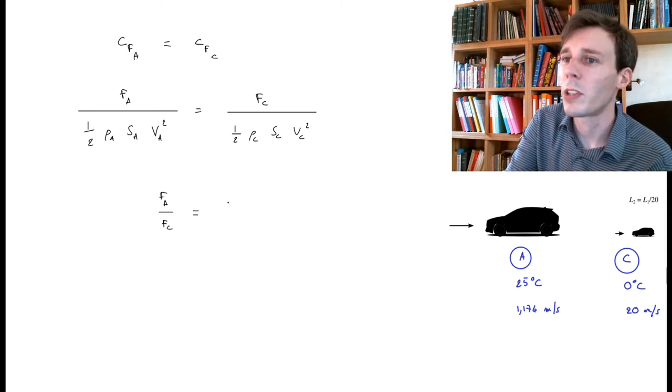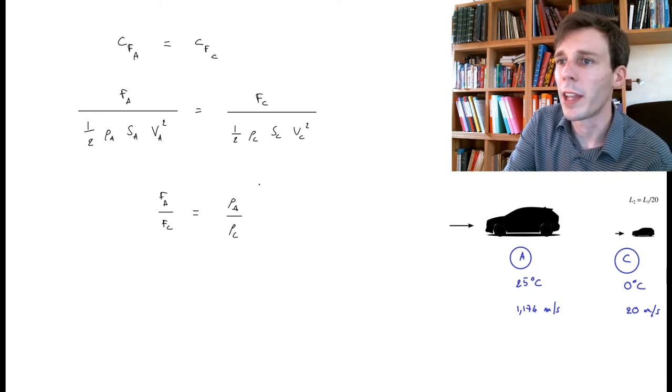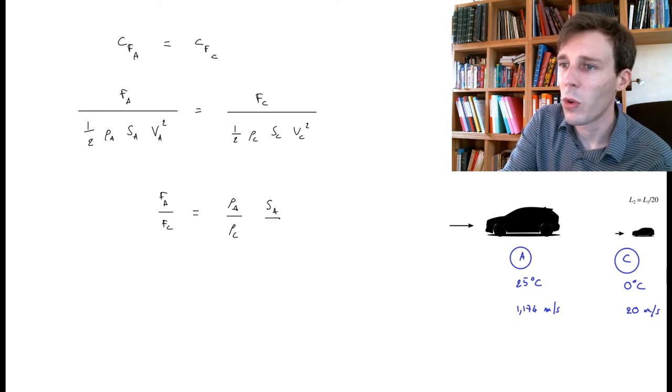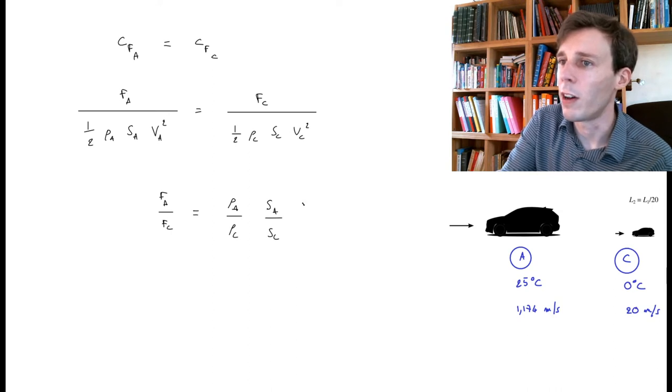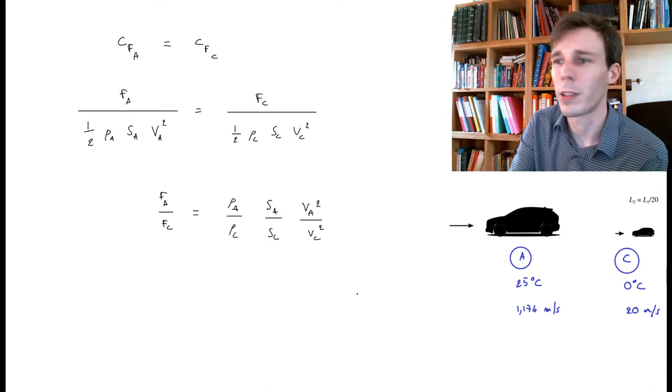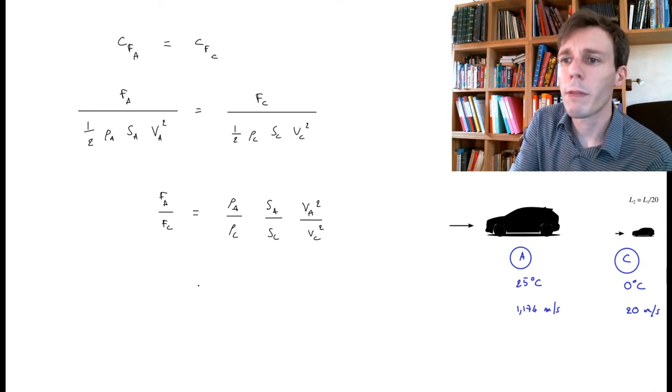FA over FC, in this case, happens to be ρA over ρC, and then I have SA over SC, and then I have VA squared over VC squared, like this. Okay, let's go through them one by one.